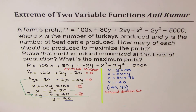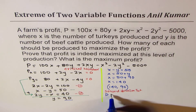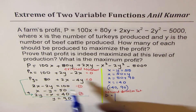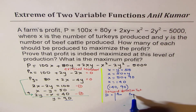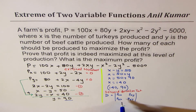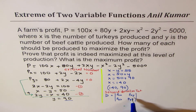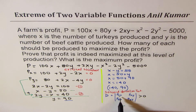In the second derivative test, we try to find the second derivatives of the function. Since we are using P as the function, we find the second derivative with respect to x (Pxx), the second derivative with respect to y (Pyy), and the mixed partial (Pxy). If the discriminant D is greater than zero, then we have a maximum or minimum. If Pxx is positive we expect a minimum; if Pxx is negative, we expect a maximum.